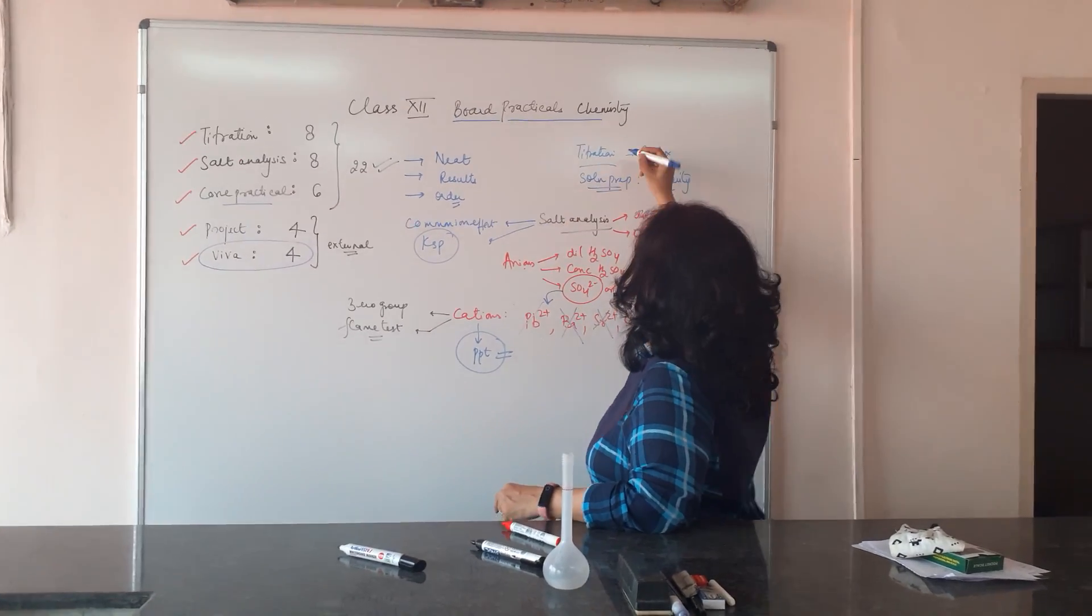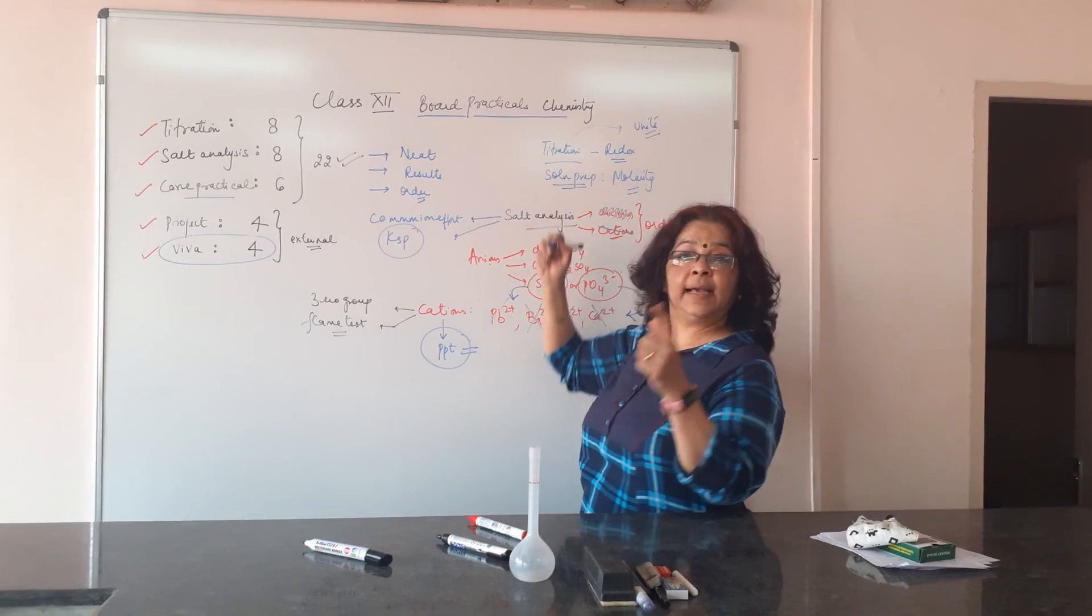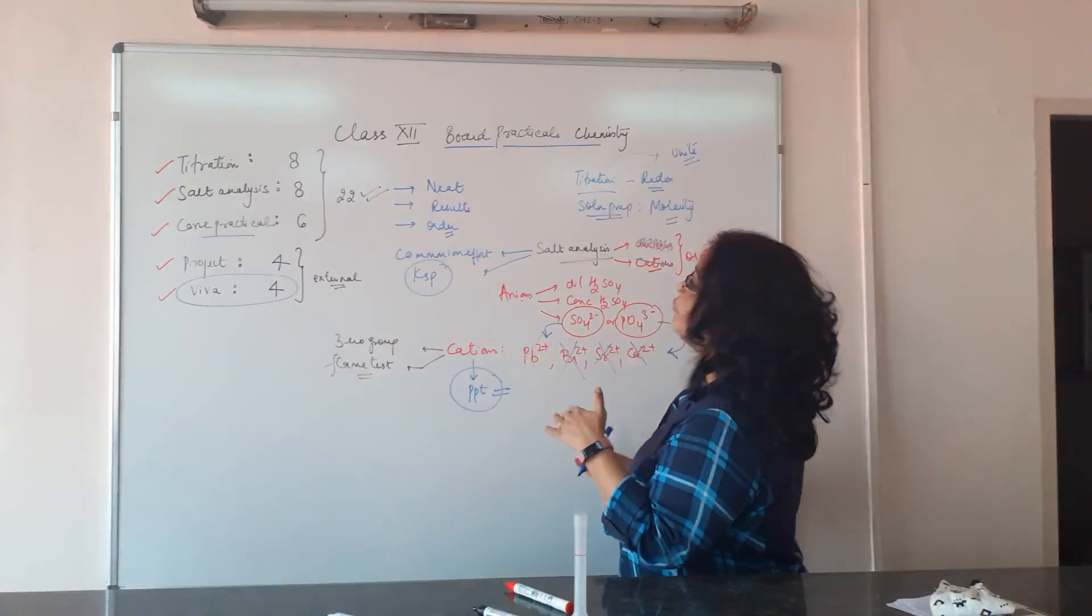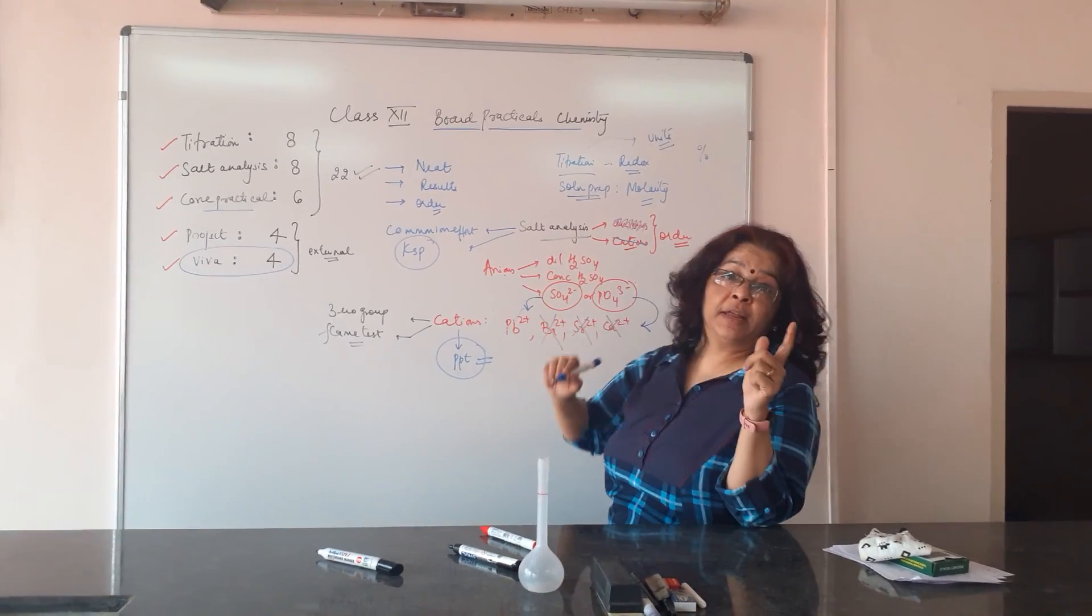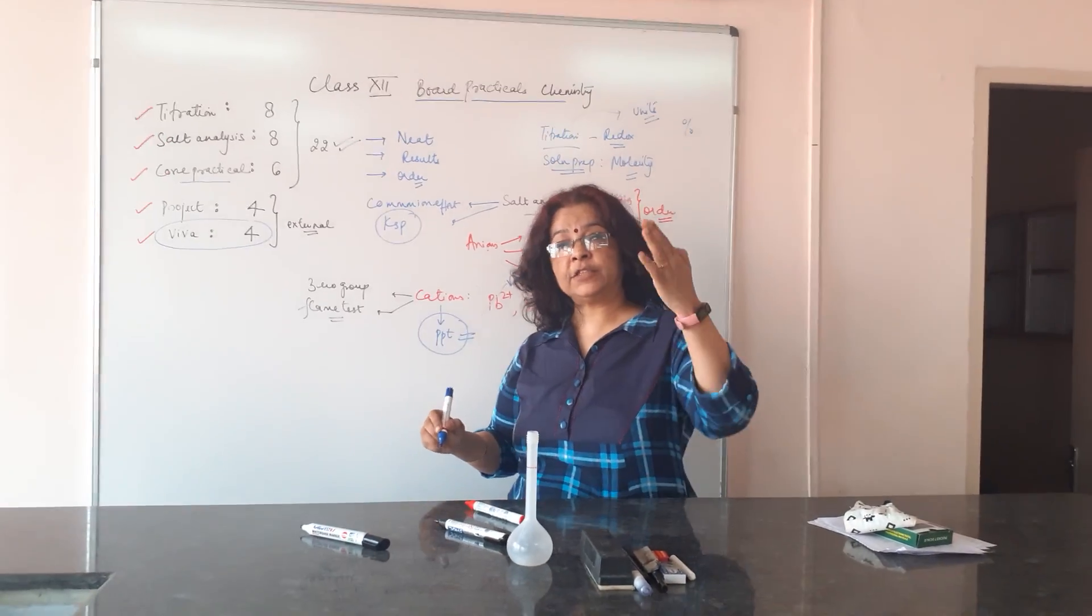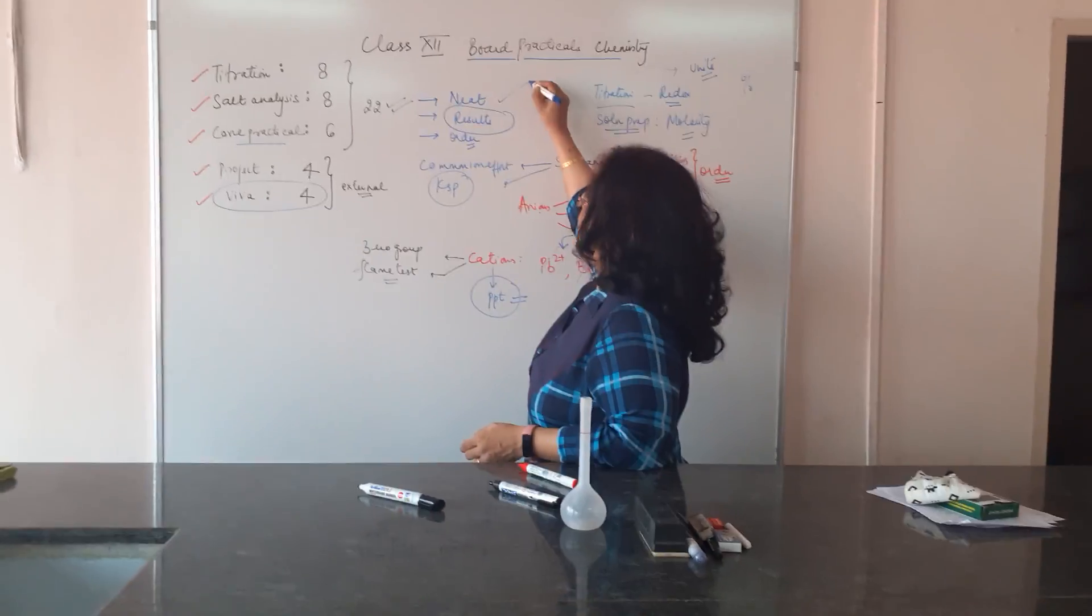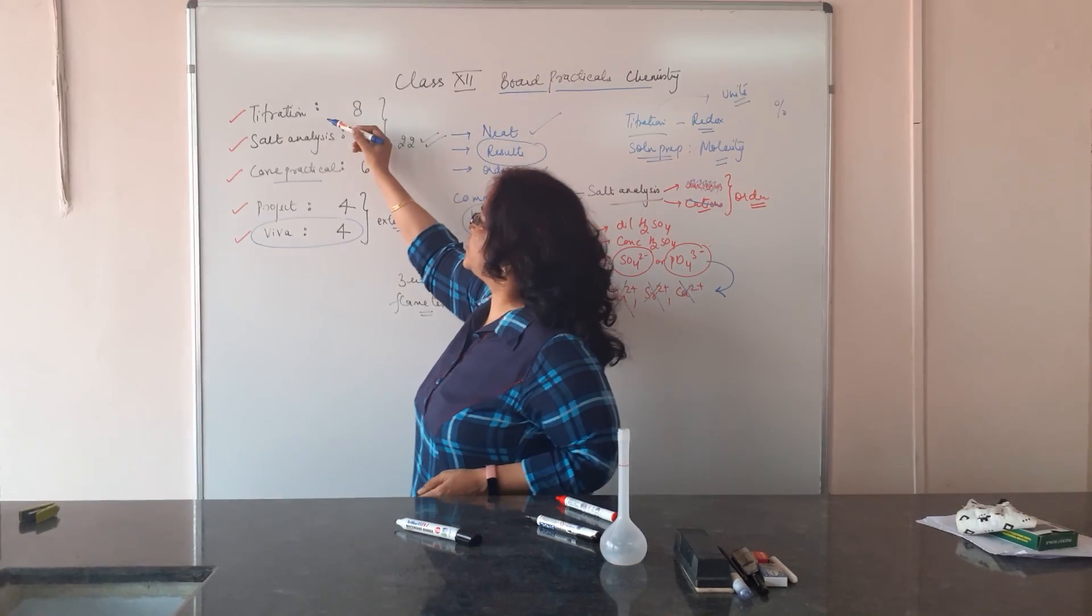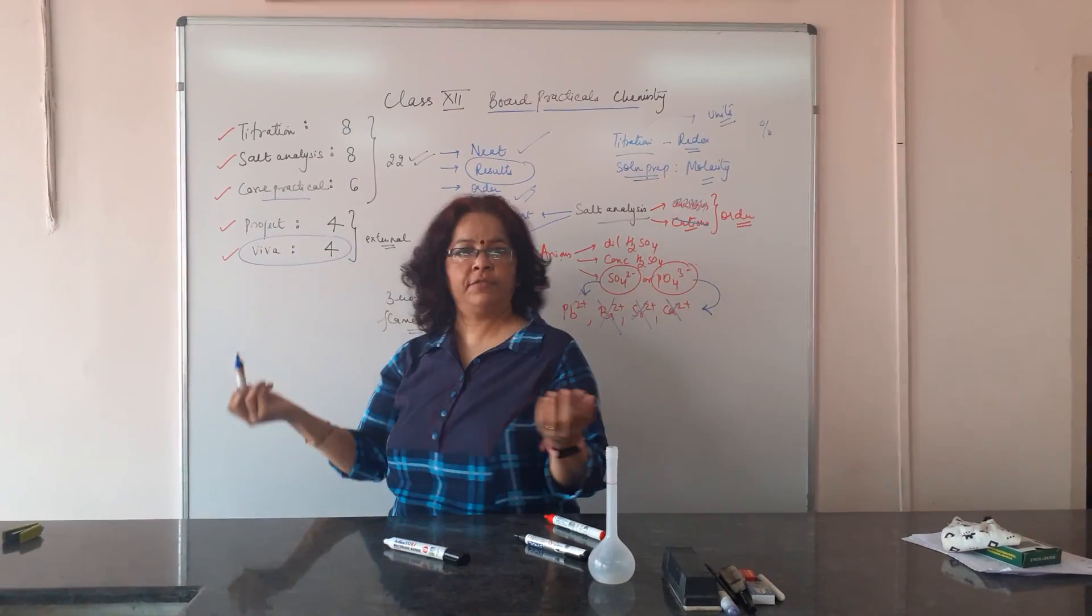In your titration, you also need to mention the units. Molarity here for M. Strength here for grams per liter. And for percentage, you will just put the sign of percentage. Do not forget the units. Results for the three practicals are essential. Neatness is important. And follow the order from titration to salt analysis to your core practical and rest is the viva. Is that fine?